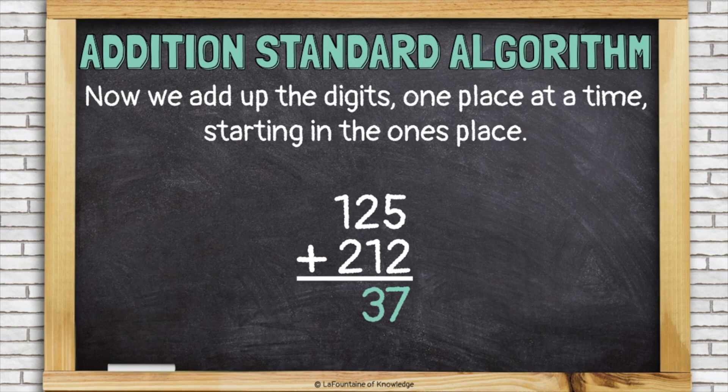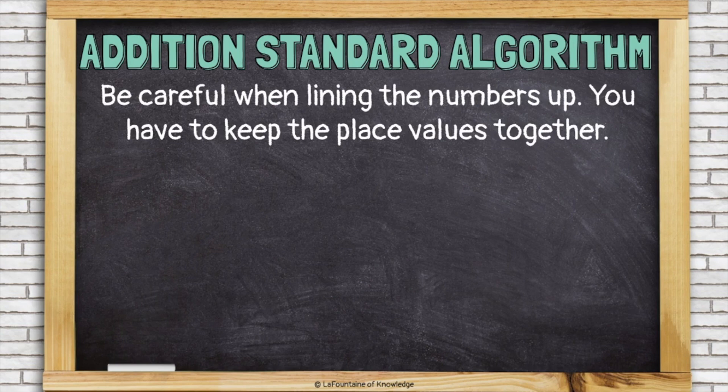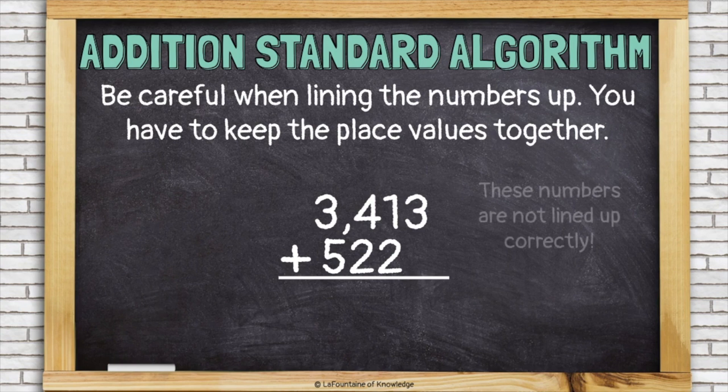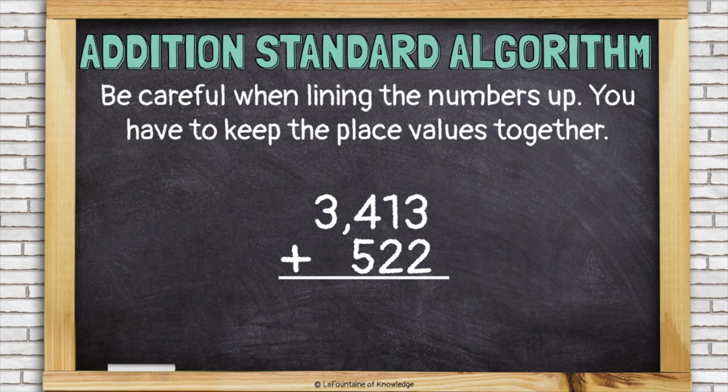And finally we'll add the hundreds together. One plus two is three. Be careful when lining up the numbers. You have to keep the place values together. Take a look at this problem: 3,413 plus 522. The thousands in the top number are on top of the hundreds in the bottom number. This will not work. We have to keep all of the ones lined up, the tens lined up, the hundreds lined up. Keep the places together. That's better.